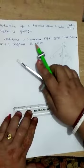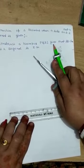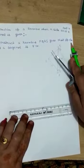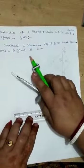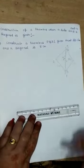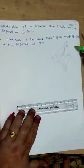Construct a rhombus PQRS given that AB is 5 cm and a diagonal is 8 cm. So this is our rough figure.